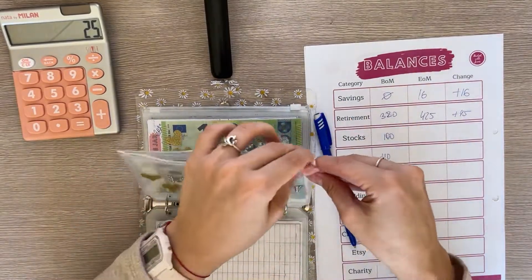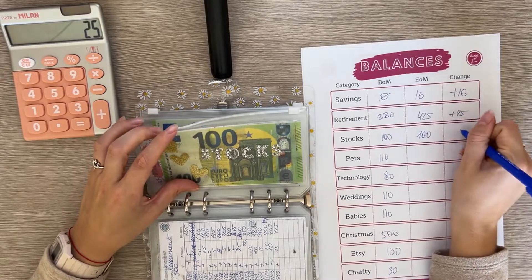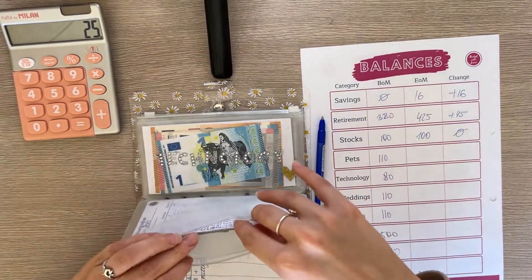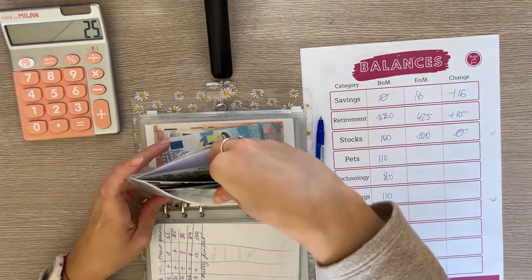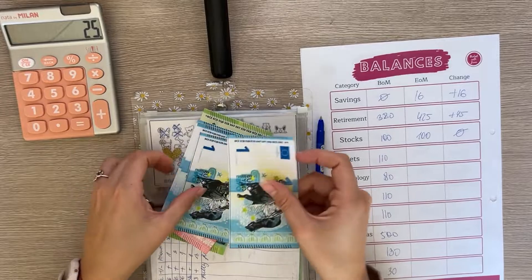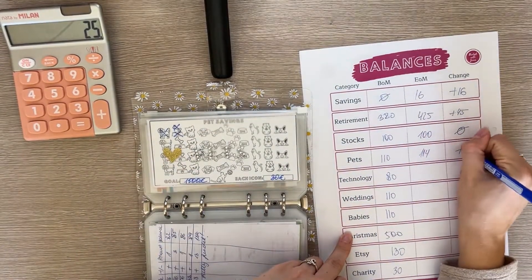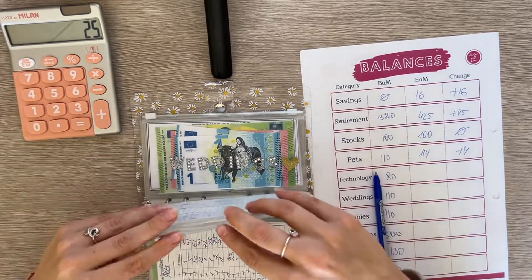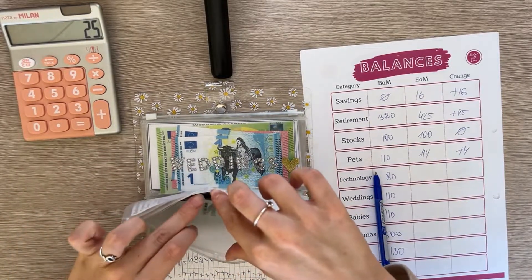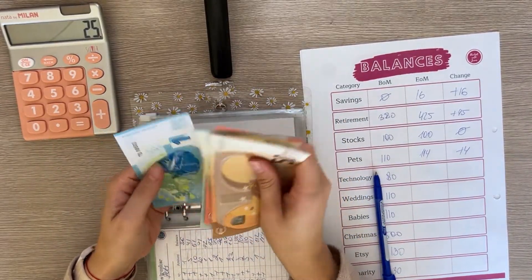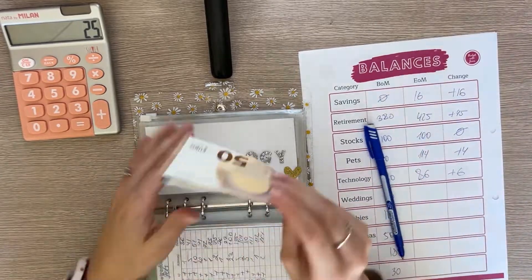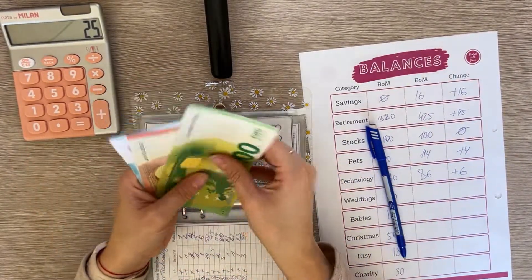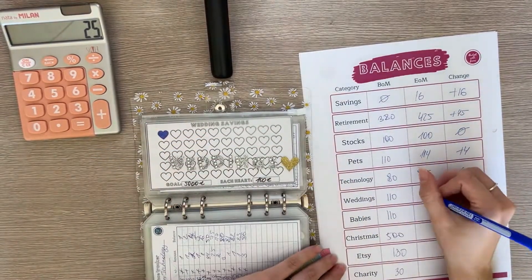Stocks hasn't changed, it's still fully funded at $100. Next is pets and we have $114 which is a plus four euro difference. We can't color in another tracker but we might be able to next time. Next we have technology and technology now has $86 which is a positive six difference.